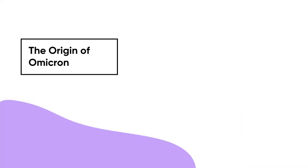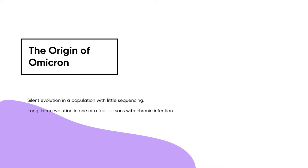First, the origin of Omicron. The Omicron variant did not develop from one of the earlier known variants, as evidenced by several differences between their genomes. Three possible explanations have been proposed: silent evolution in a population with little sequencing; long-term evolution in one or a few persons with chronic infection; or evolution in other animals, especially rodents.